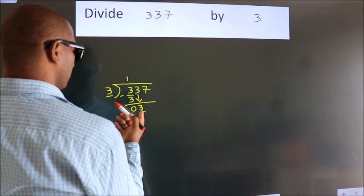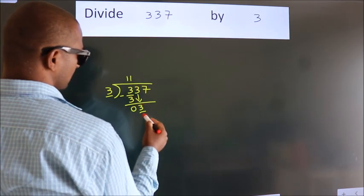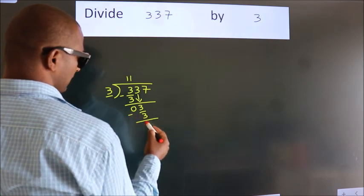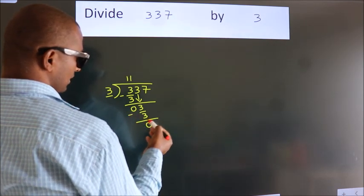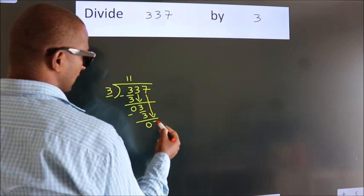So, 3. When do we get 3? In the 3 table, 3 once is 3. Now we subtract and get 0. After this, bring down the beside number, so 7 down.